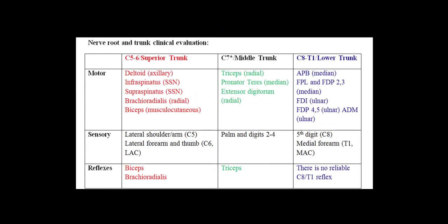We're going to go through the muscles that will be weak in C5/C6 radiculopathies — which look very much like a superior trunk plexopathy — then C7 radiculopathy, which accounts for more than half of all upper extremity radiculopathies, and then C8/T1 radiculopathies along with lower or inferior trunk plexopathies. Medial trunk plexopathies almost never occur in isolation.